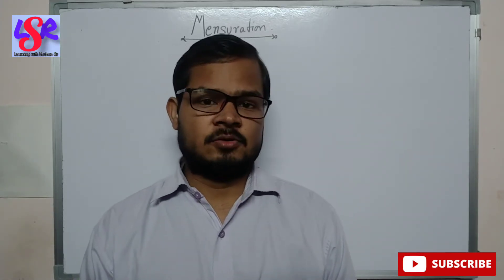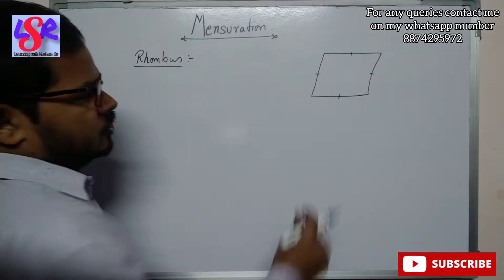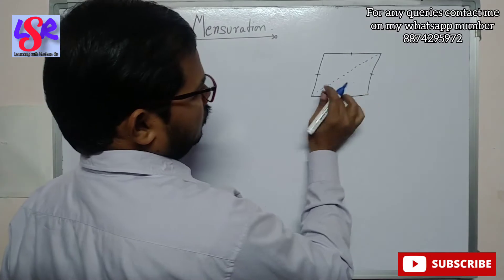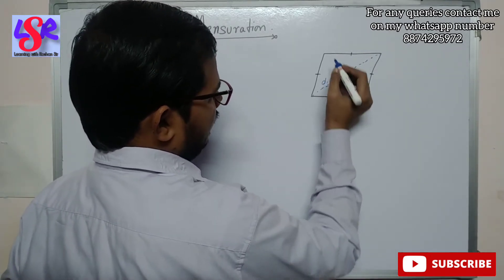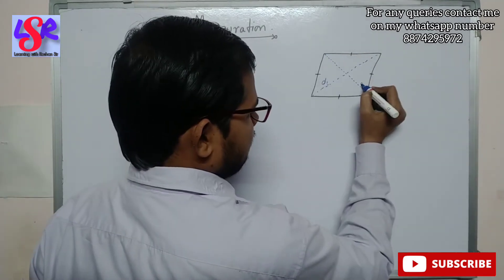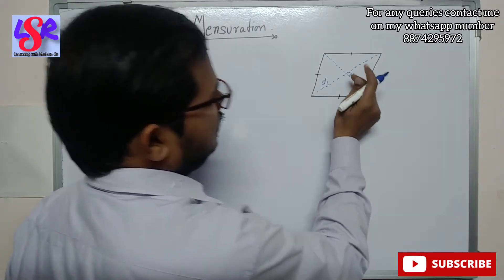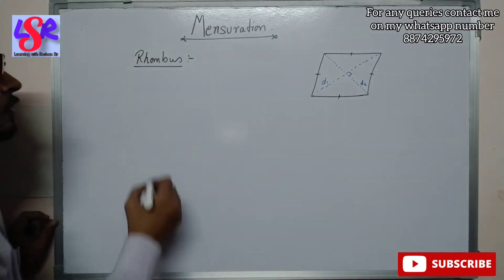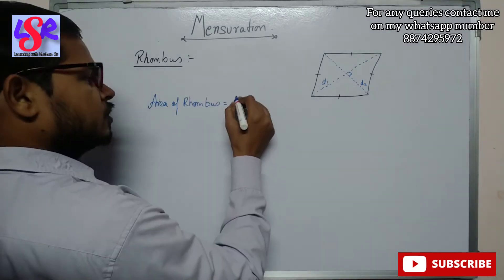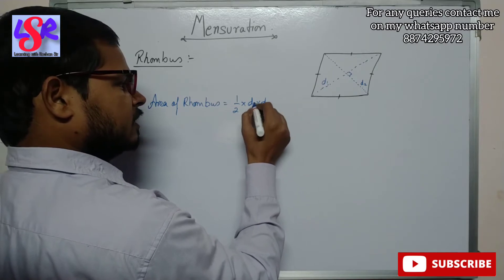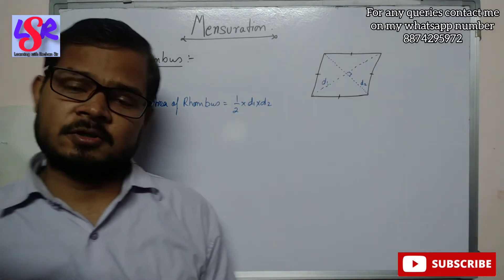Hello everyone, we are going to start with exercise 18.2 of the chapter mensuration. Before starting the exercise, we are going to learn what is the area of a rhombus. We have a rhombus figure with diagonal 1 and diagonal 2, and these diagonals intersect each other at 90 degrees — they are perpendicular to each other. The area of rhombus equals 1/2 into d1 into d2, that is, half the product of the diagonals.